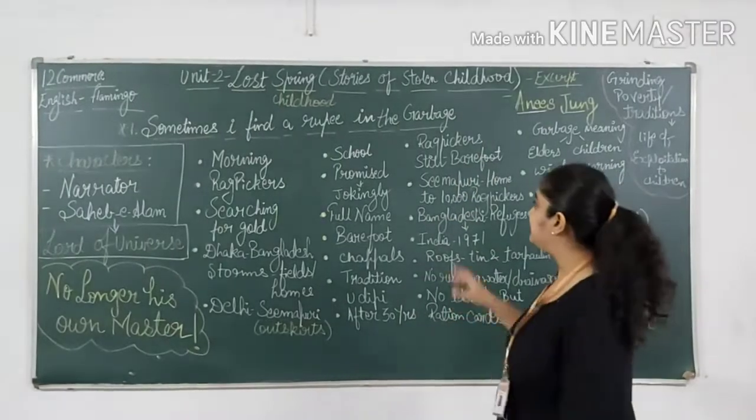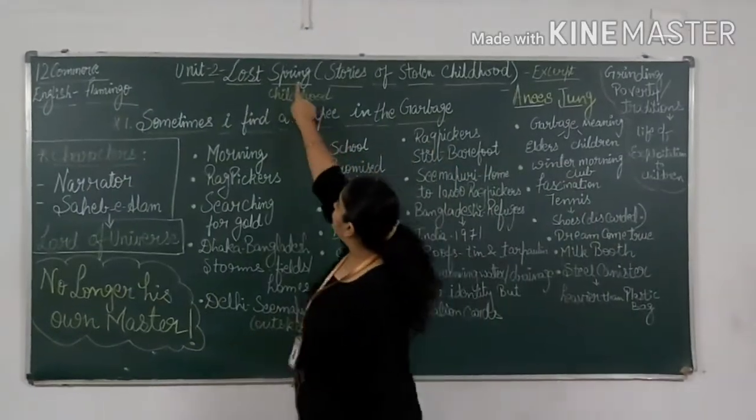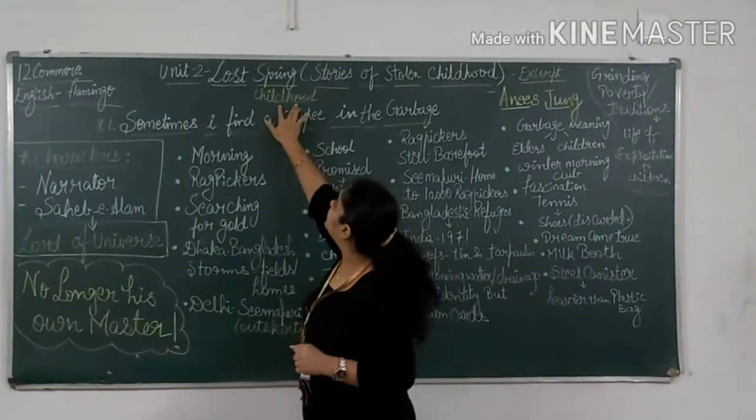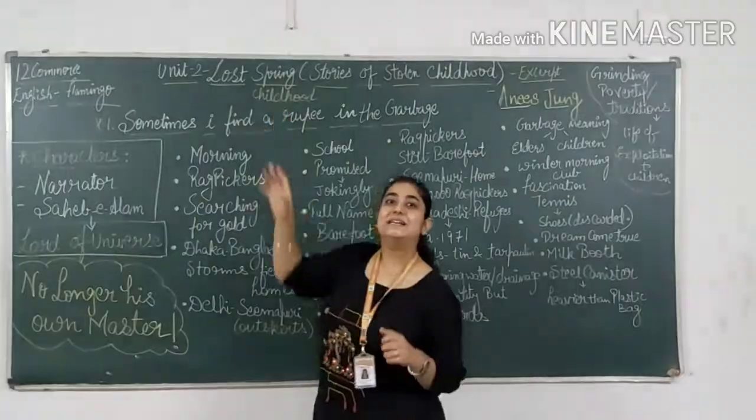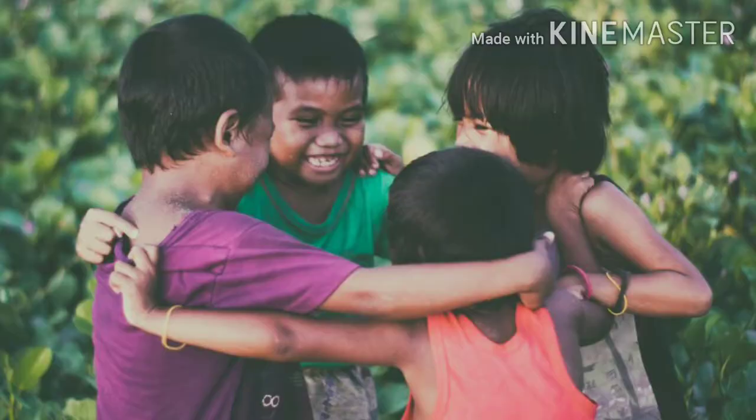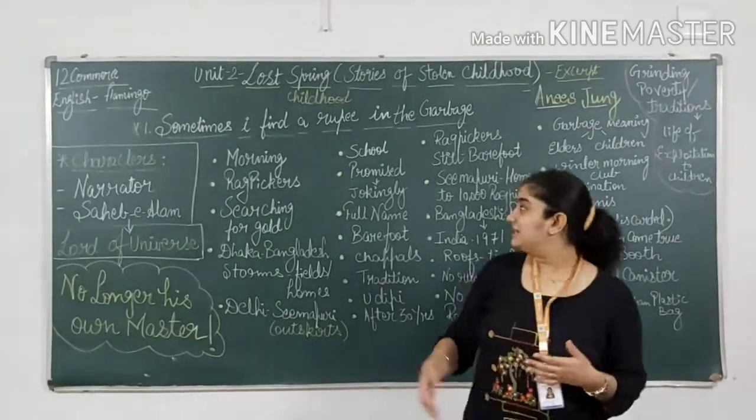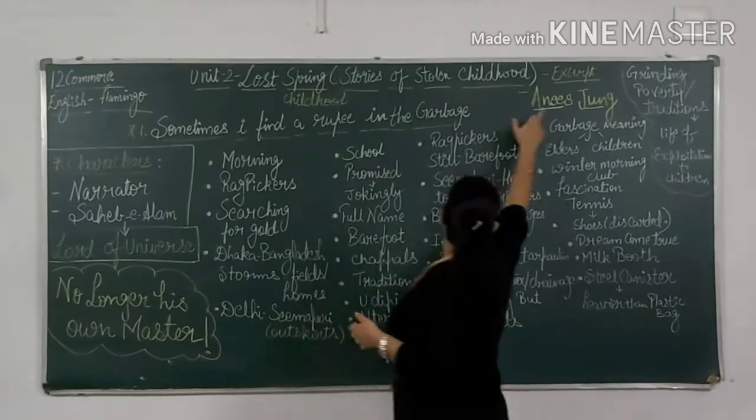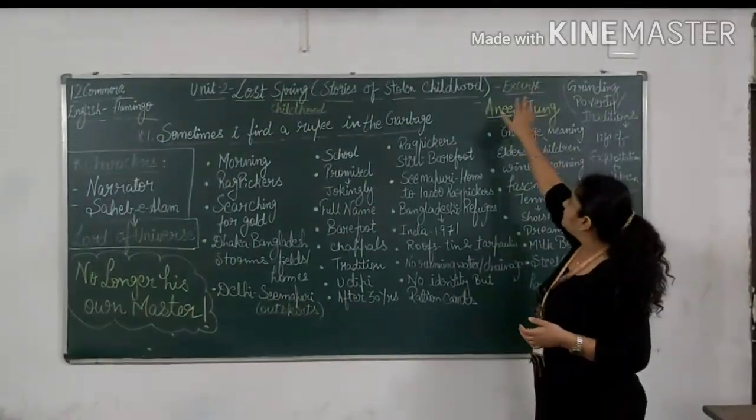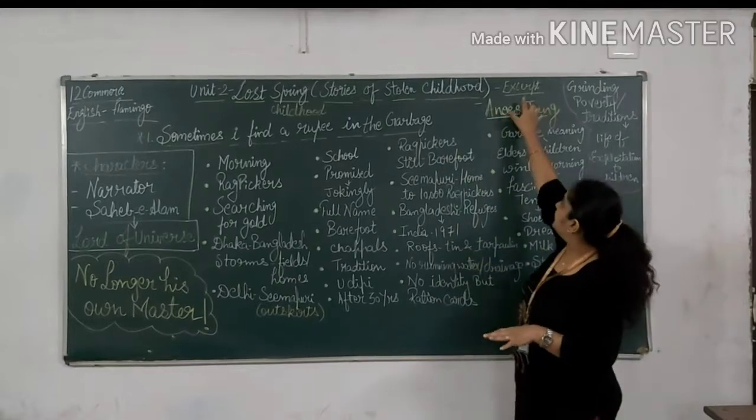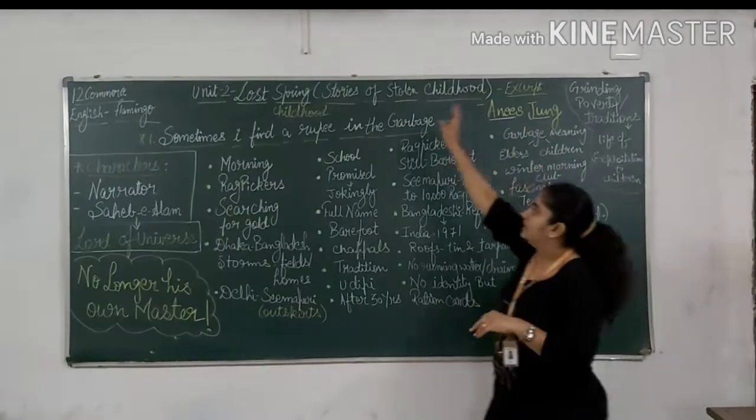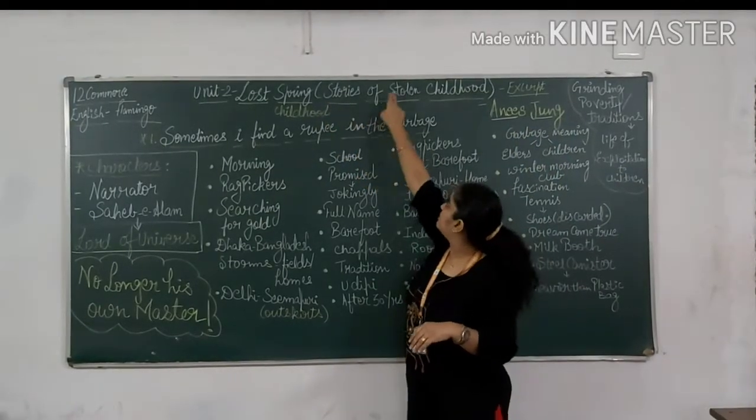Now why Lost Spring? Why is this name? Because spring - your spring is not the strange spring, your spring is the childhood. It is a season that we enjoy the most and hence it is the childhood, it is the phase of our life that we enjoy the most. So why is it lost? Because here the author, Anees Jung, has written this story. It is an excerpt, that means it is a taken part from her book which is titled as Lost Spring, Stories of Stolen Childhood.